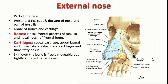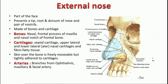Now coming to the blood supply, it is mainly supplied by the branches of the dorsal nasal artery and infratrochlear branches, all from the ophthalmic artery. Then the infraorbital artery, which comes out through the infraorbital foramen, will also supply the sides of the nose. The antero-inferior part is supplied by the septal branches of the facial artery.